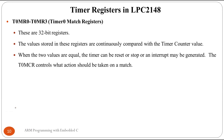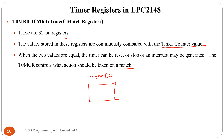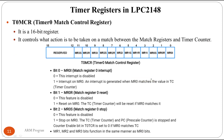Timer 0 has four 32-bit Match Registers. The values stored in these registers are continuously compared with the timer counter value. When the two values are equal, the timer can be reset, stopped, or an interrupt may be generated. The Match Control Register controls what action is taken on a match.